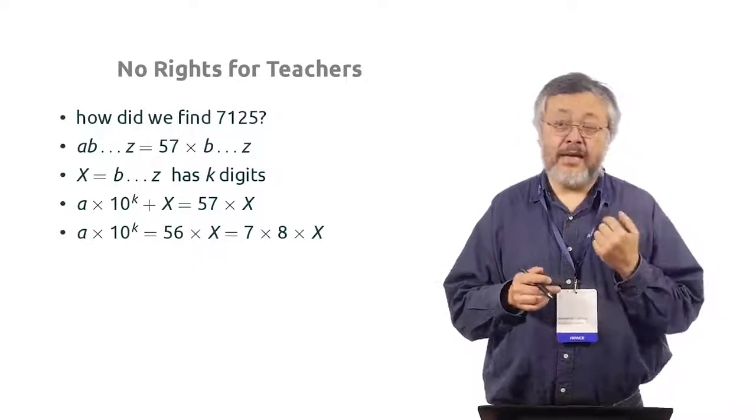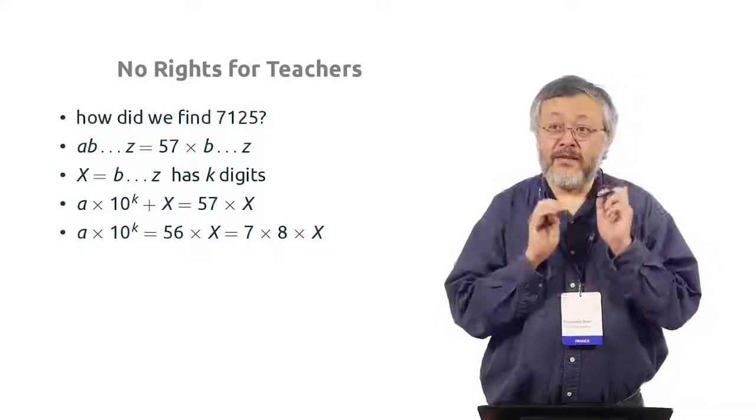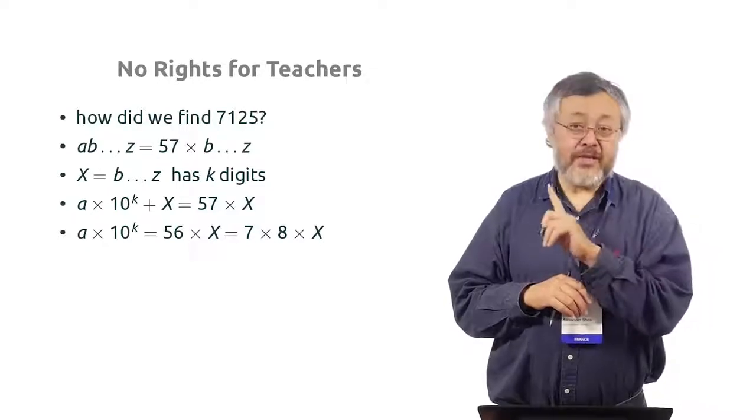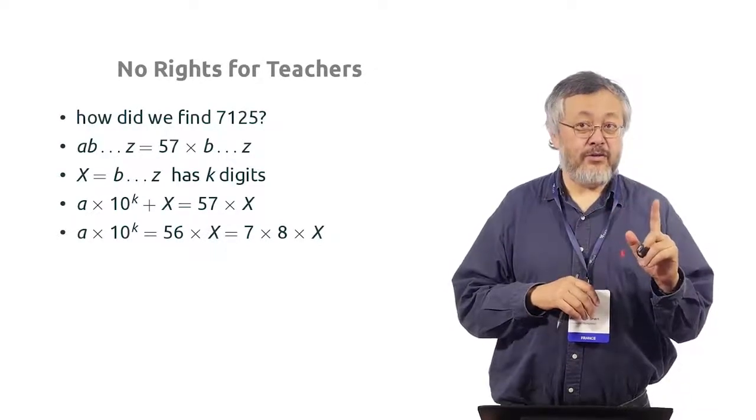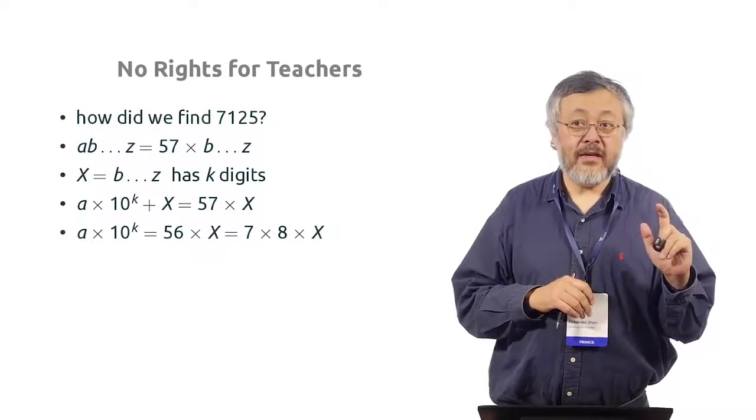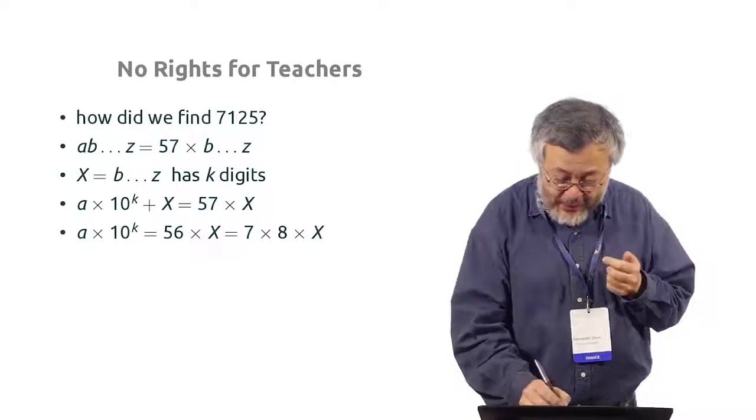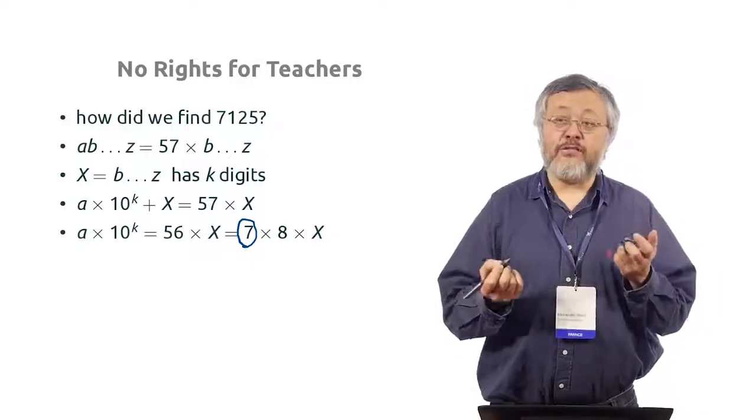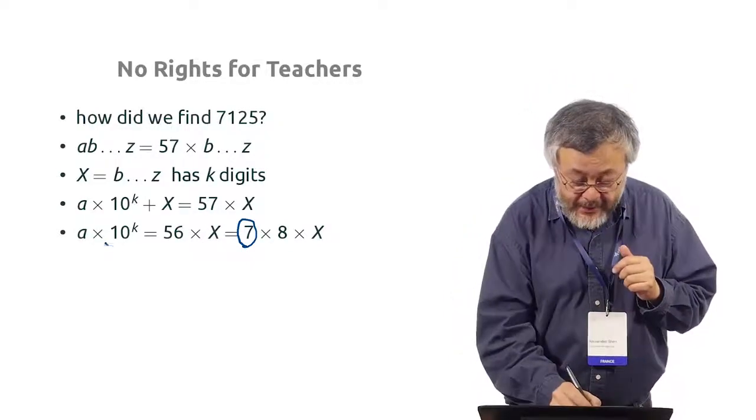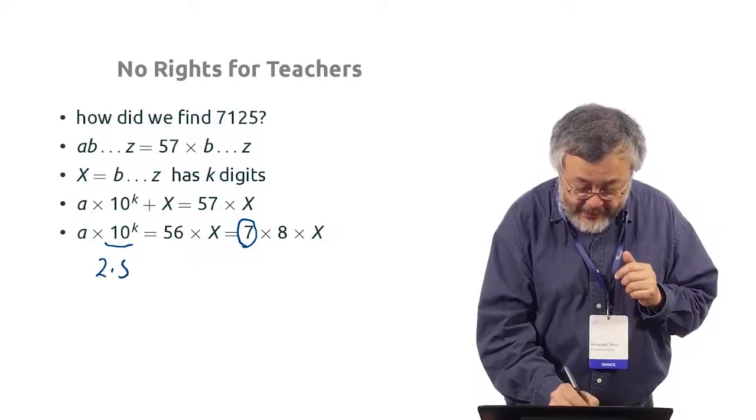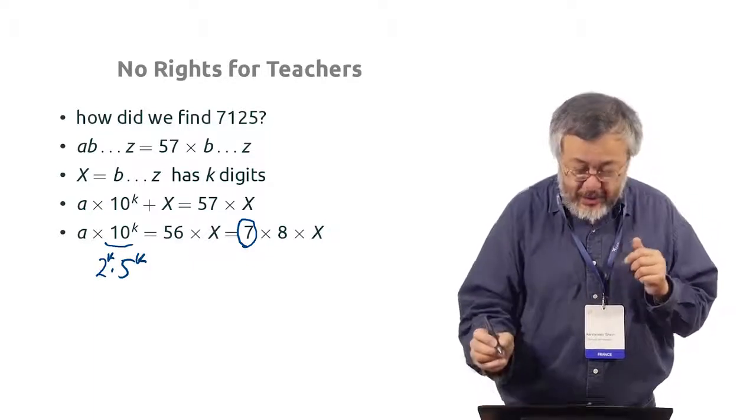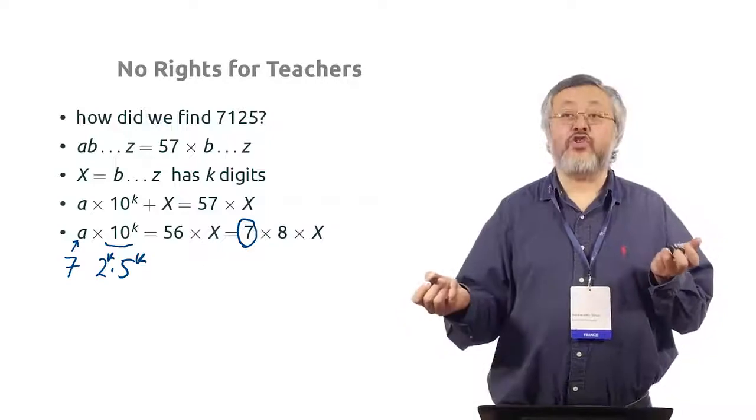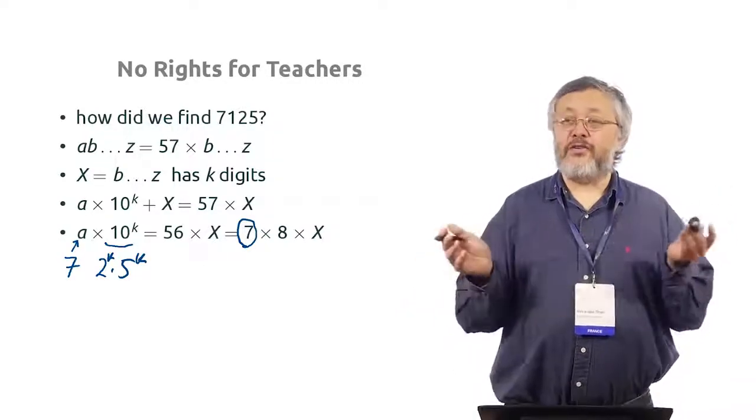And 56 is 7 times 8. And now, if you meditate a bit, you see how can you find a. From this equation, you can find a. Do you see how to do this? Look. Here, in the right-hand side, we have factor 7. So in the left-hand side, also, 7 should be somewhere. And here, 10 is 2 times 5. So it's 2 to the k times 5 to the k. Here, 7 cannot hide. So the 7 should be here. And a is just one digit. So a should be 7. There is no other possibilities.